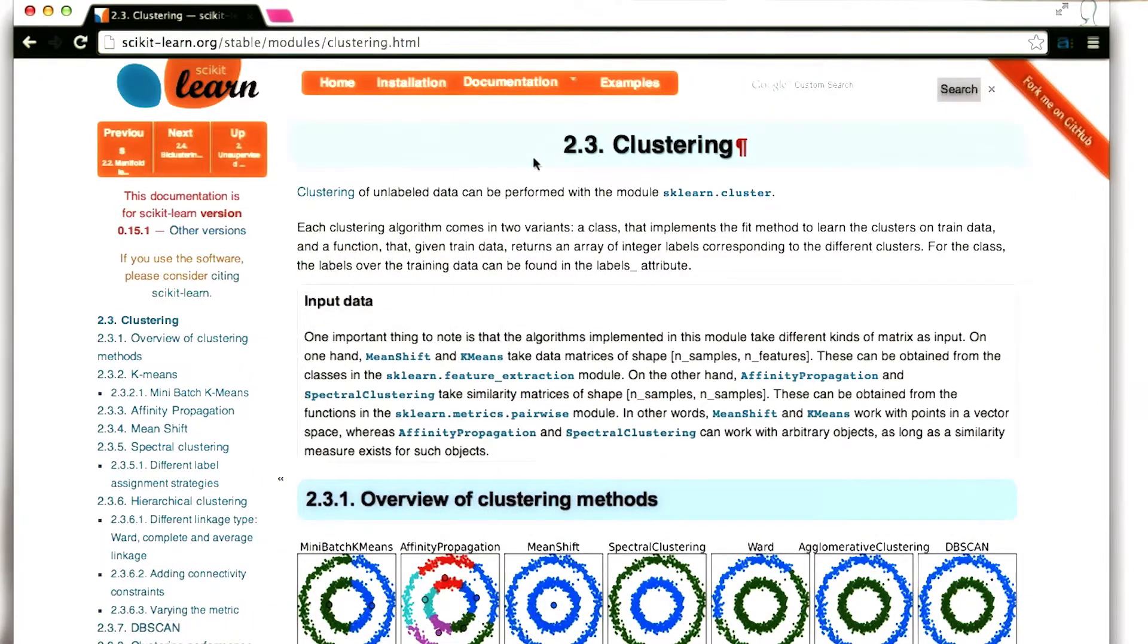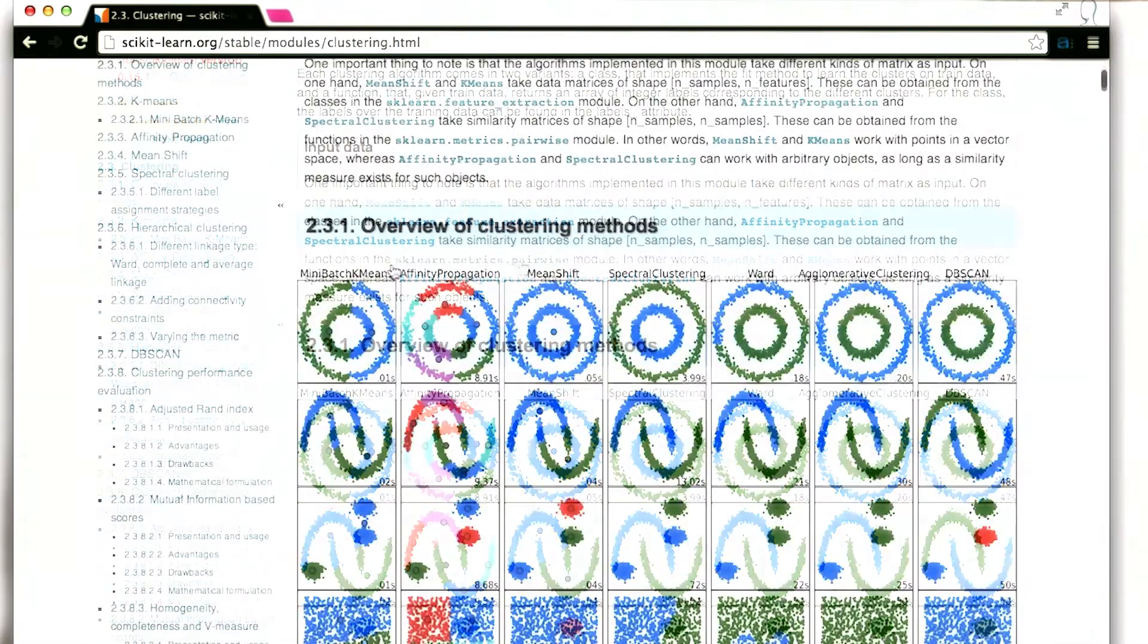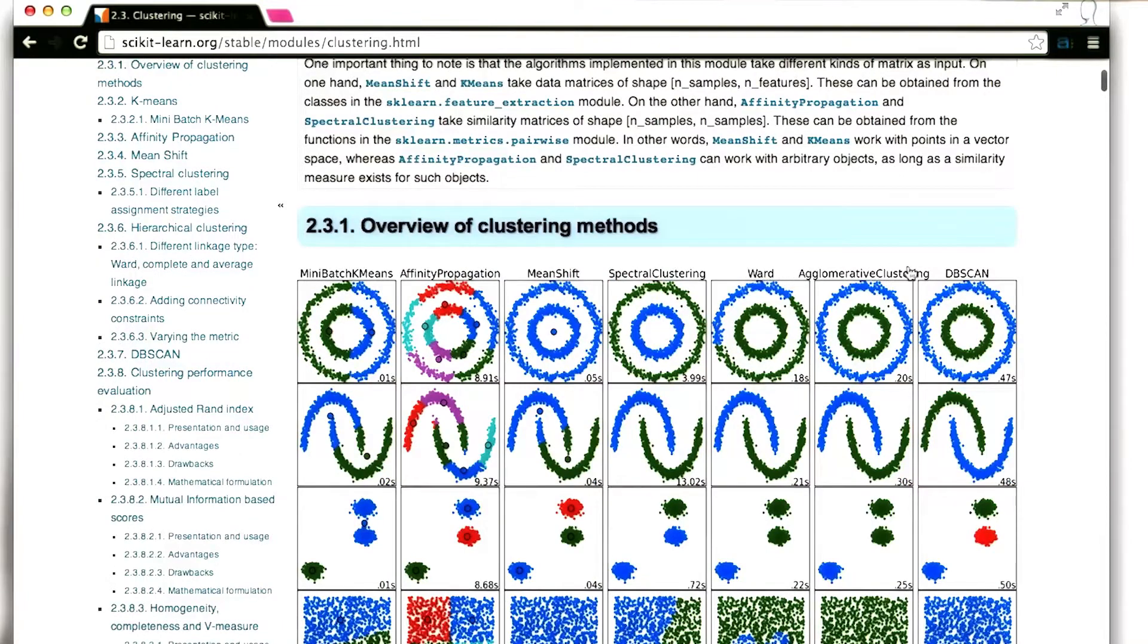The first thing that I notice when I get to this page is that there are many types of clustering besides just K-means clustering. So all of these different columns right here are different types of clustering. We won't go into all of these.